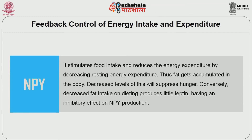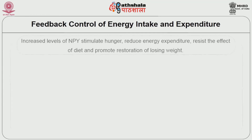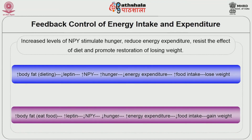Decreased levels of NPY will suppress hunger. Conversely, decreased fat intake during dieting produces little leptin, which has an inhibitory effect on NPY production. Increased levels of NPY stimulate hunger, reduce energy expenditure, resist the effect of diet and promote restoration of lost weight. This gives the sequence of how energy expenditure takes place on the basis of food intake and either lose or gain weight.